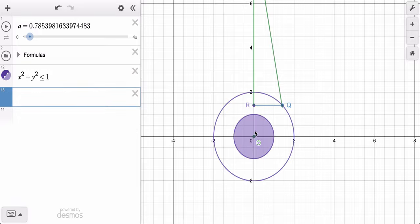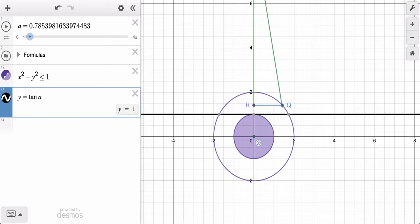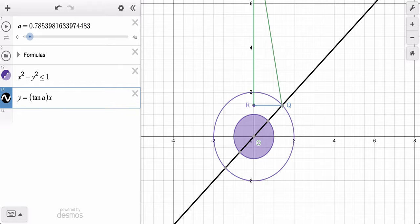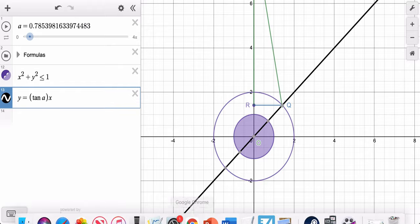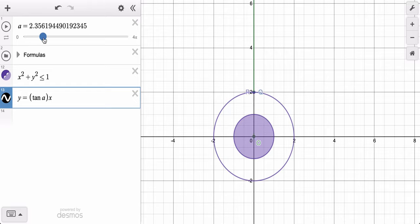The slope of this line is the tangent. So y equals the tangent of a. I'm going to put that in parentheses so Desmos understands that I want that as the slope times x. And there's our linear function. Now, as you increase a, you can see that this line will travel and help you define the arc that you're looking for.